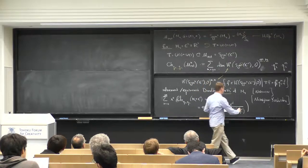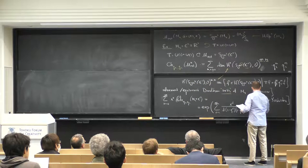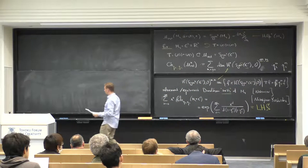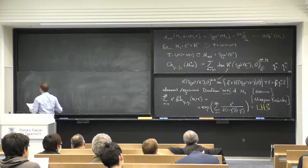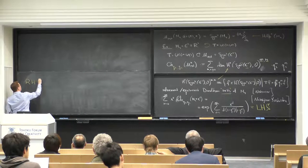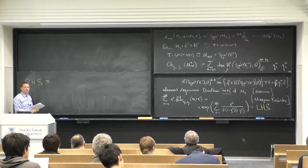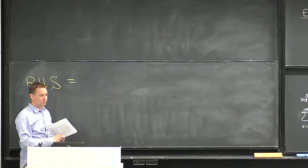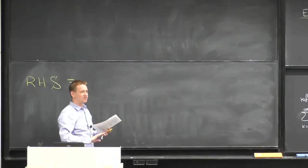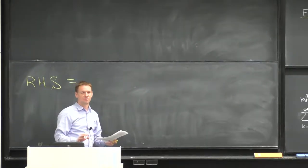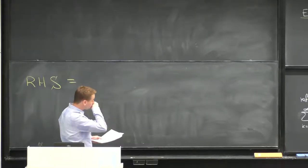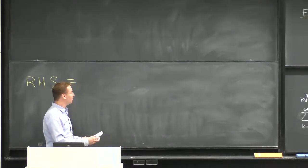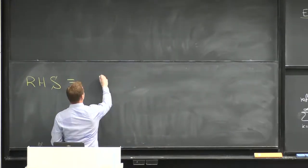This expression will be the left-hand side of some identity. Now I'm going to introduce the right-hand side, which will be a completely different-looking problem. The goal is to introduce two problems which are as far from each other as possible, because the only way to reconcile them will be to reinvent string theory, in some sense.